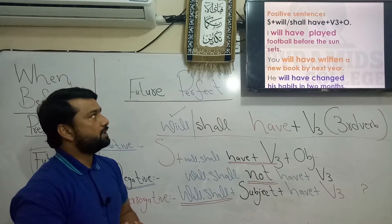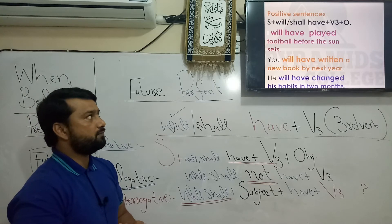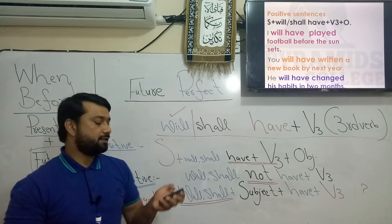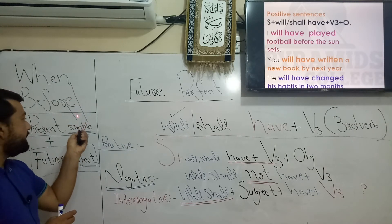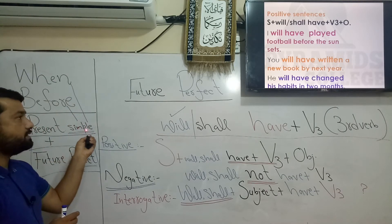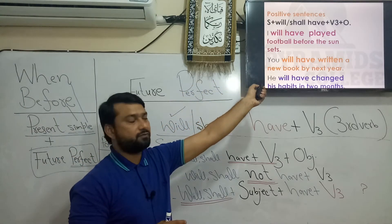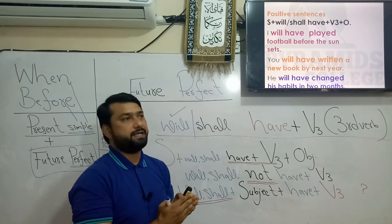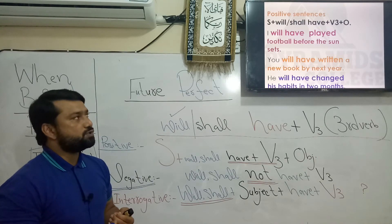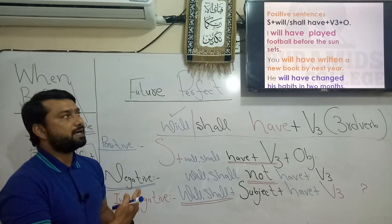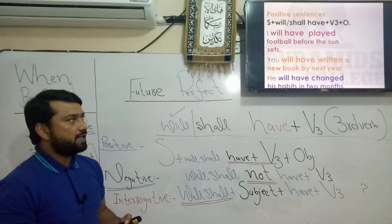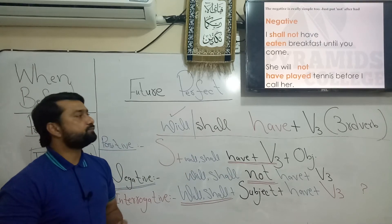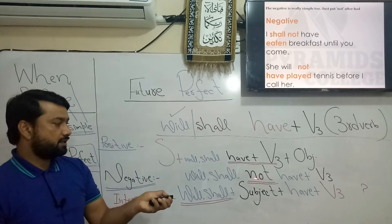Look at the examples of positive sentences: 'I will have played football before the sun sets.' Again, when we use 'before' or 'when,' we translate the clause into present simple — I have put 's' with 'sets' showing present simple third person subject. Second example: 'You will have written a new book by next year.' Third: 'He will have changed his habits in two months.'